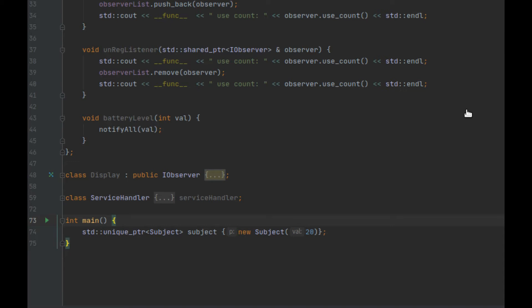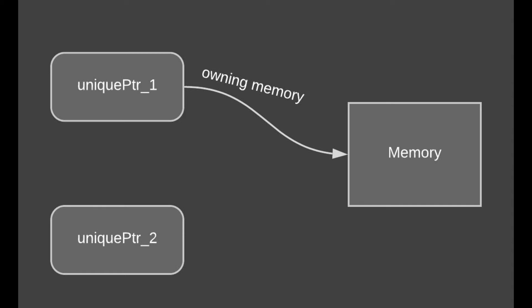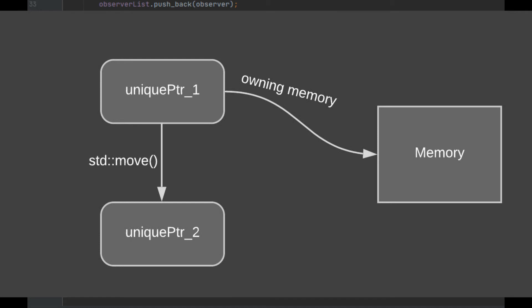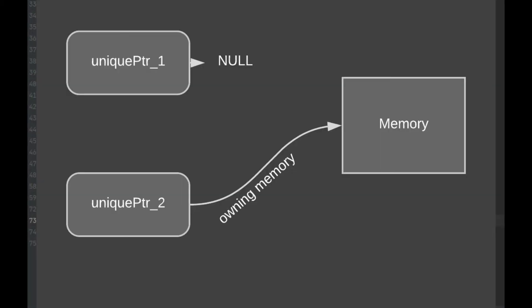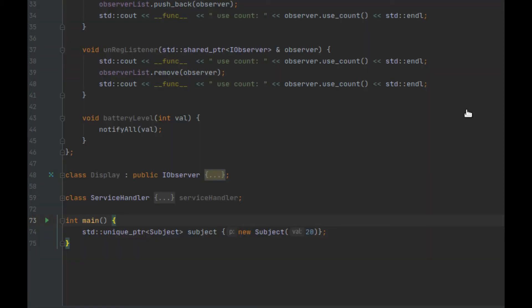If we have allocated a unique pointer, we cannot have more than one reference to that allocated memory. So if you want to make a copy of it, that is not possible. If you want to use it for a copy constructor operation, that is not possible. If you try to pass by value and have a copy of it in another function, that is not possible. The only possible thing is you can pass on the ownership of this unique pointer's pointed memory.